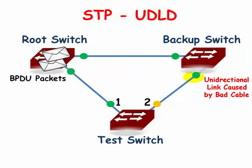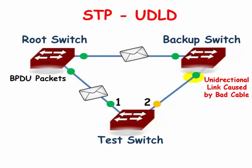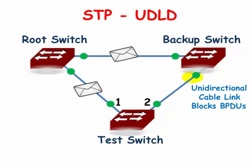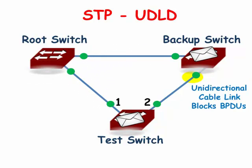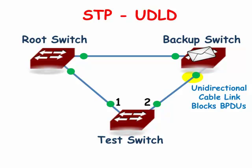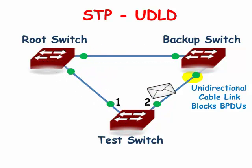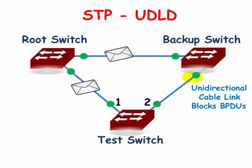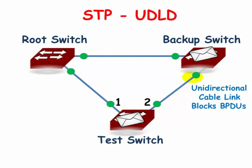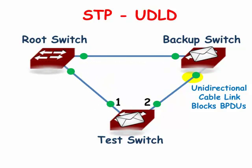A switch interprets the absence of BPDUs to mean that the interface port is not connected to another switch. However, if a bad cable causes BPDUs from being received, a bridging loop forms and the switch never realizes the mistake.